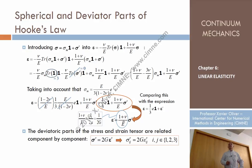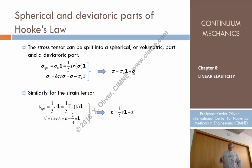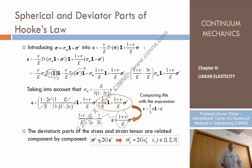So we obtain that the deviatoric part of the strains equals (1 + ν)/E times the deviatoric stresses, which is — notably — equal to 1/(2G), where G is the shear modulus, times sigma prime. Therefore, the deviatoric stress sigma prime is independent of the volumetric strain E; it depends only on the deviatoric strain epsilon prime, proportionally through G.